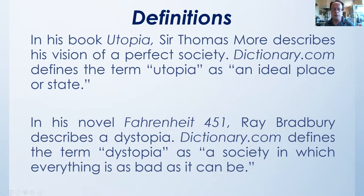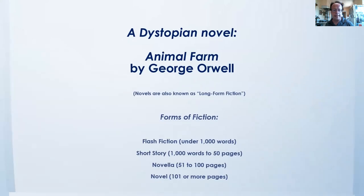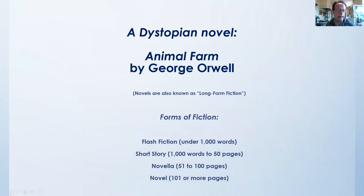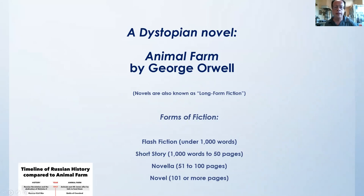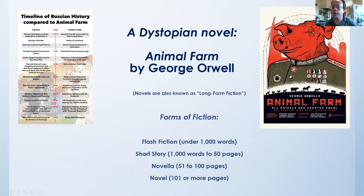For instance, in the novel Fahrenheit 451, Ray Bradbury describes a dystopia. Dictionary.com defines the term dystopia as a society in which everything is as bad as it can be. Now, in Animal Farm everything is not as bad as it can be, but it is certainly under the dictatorship of this pig called Napoleon, who really represents Joseph Stalin, the former Soviet leader. So Animal Farm, as I said, is a dystopian novel, and it's a fairly short novel — a little bit more than 100 pages, depending on the edition that you have.